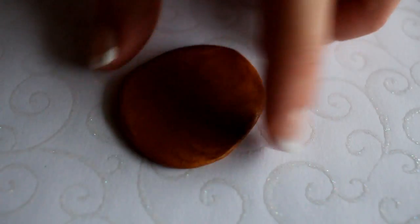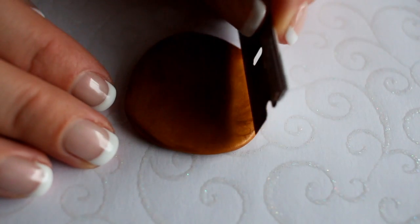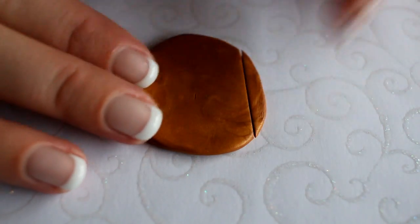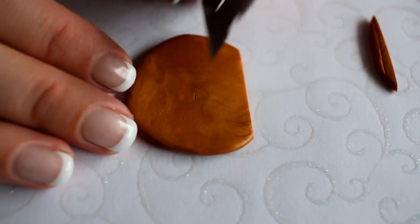So now it's pretty much flat, and we're going to make the shape of the cutting board with a razor blade.